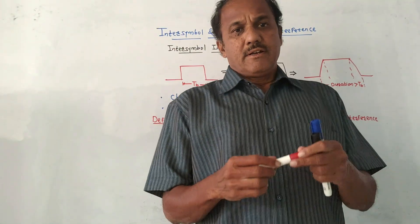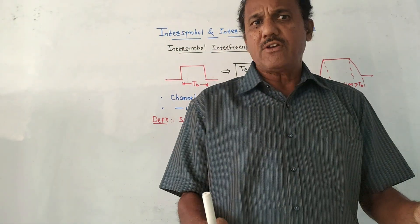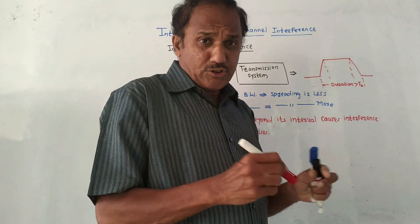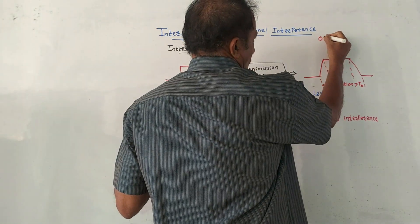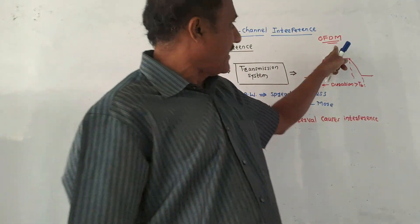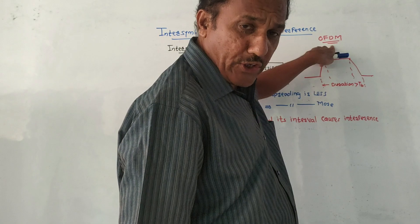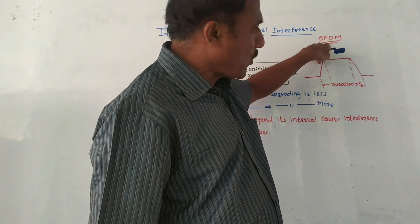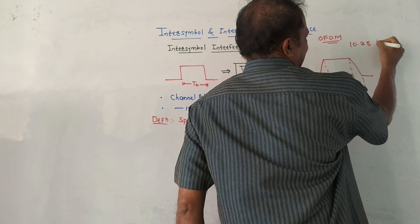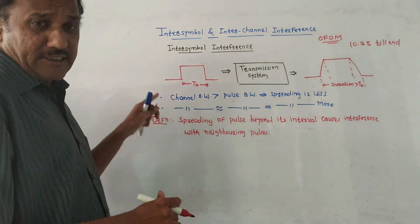Hello and welcome back to this channel. This topic is Inter-Symbol and Inter-Channel Interference — the last topic for Unit 3 for the subject Digital Communication. An important announcement: the topic of OFDM (Orthogonal Frequency Division Multiplexing) has already been covered in many uploaded videos for other subjects. I will provide the link in the description box. Let us start the session without wasting time.